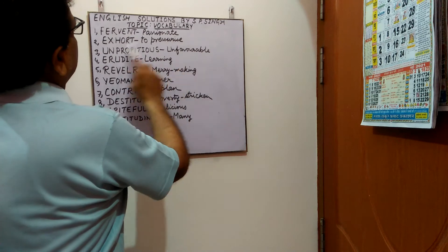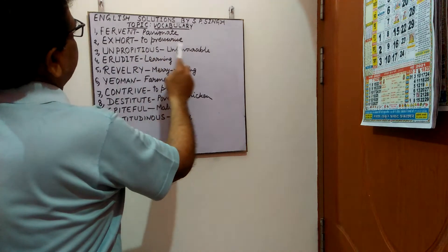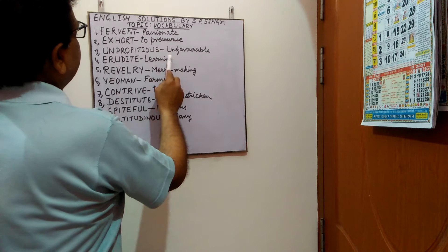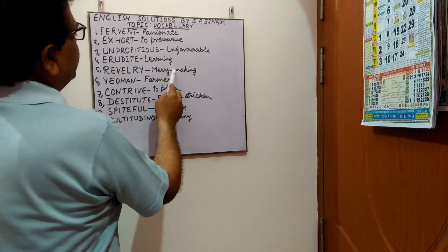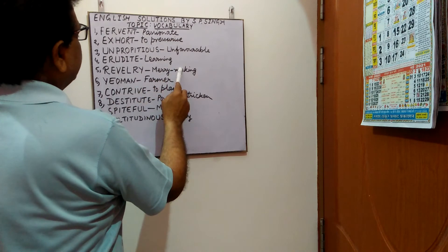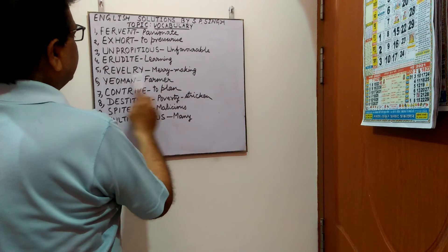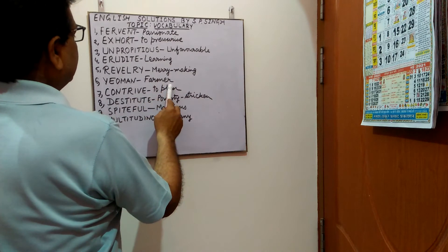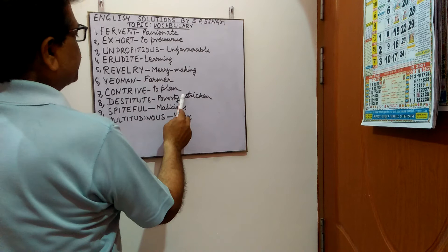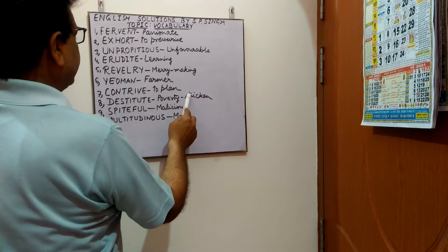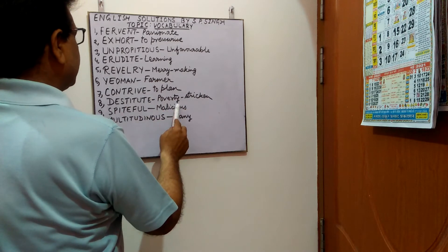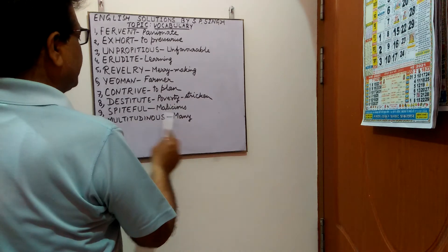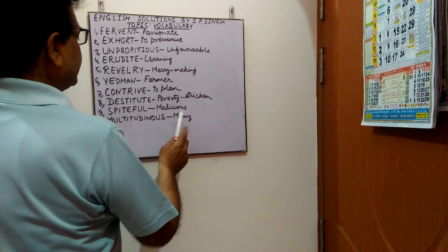Erudite means learning. Reveling means merrymaking. Contrite means remorseful or repentant. Destitute means poverty-stricken. Spiteful means malicious. Multitudinous means many.